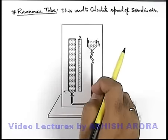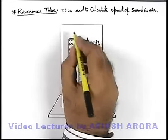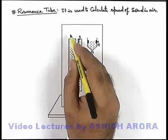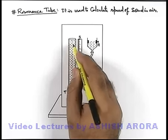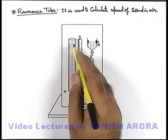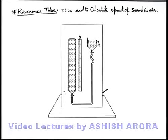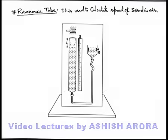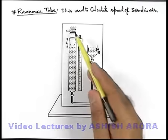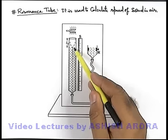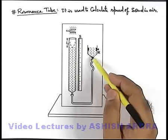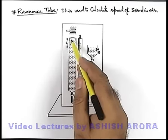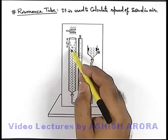Now to start with the experiment, we bring a tuning fork near to the mouth of this tube, due to which the air column above the water level will start oscillating. We gradually lower down the air column — gradually the length of air column will also increase.